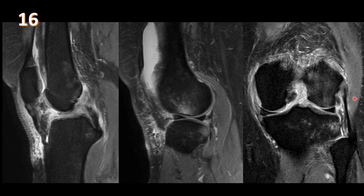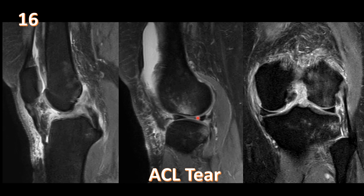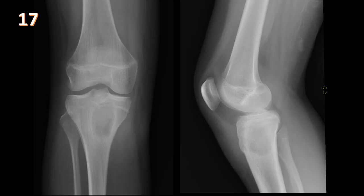Sagittal and coronal fluid-sensitive fat-suppressed MRI images of the knee show effusion at the suprapatellar fat pad and subchondral edema at the weight-bearing lateral femoral condyle and posterior tibial plateau — a kissing contusion pattern implying prior knee subluxation. In the sagittal images the ACL is indistinct, and there is evidence of anterior tibial translation with visualization of the fibular collateral ligament. This is an acute ACL tear with bone marrow edema. Secondary findings like kissing contusions and anterior tibial translation help confirm the diagnosis.